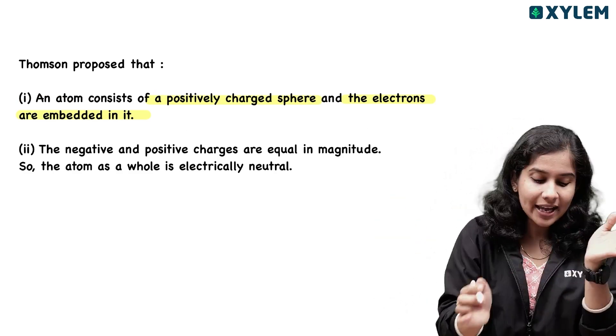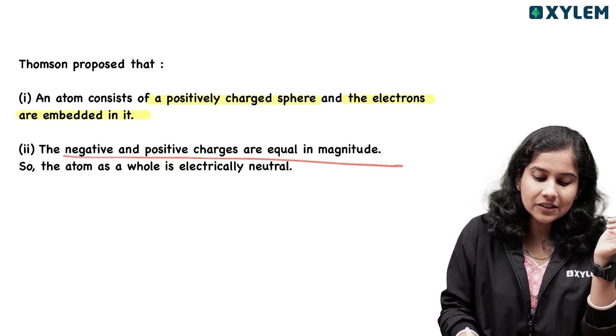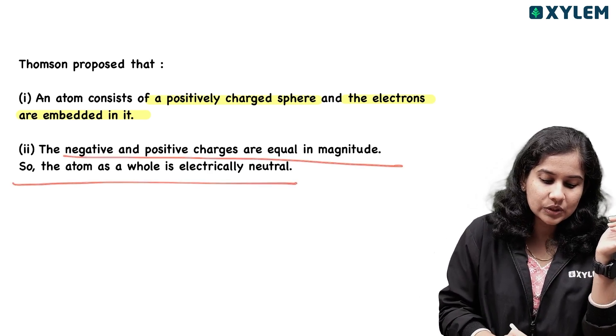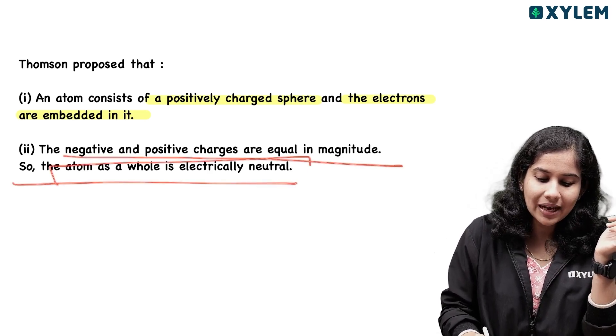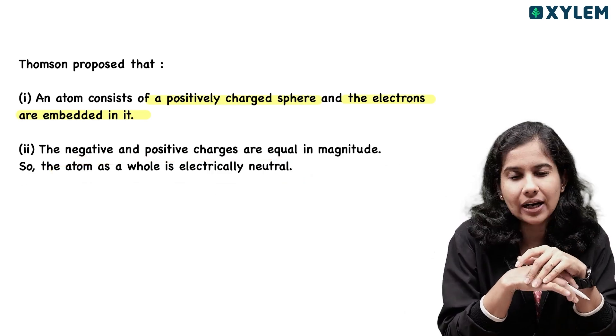The negative and positive charges are equal in magnitude. So the atom as a whole is electrically neutral.